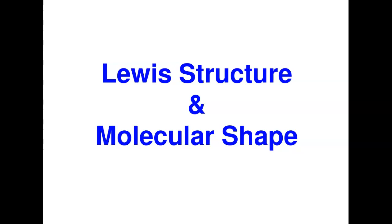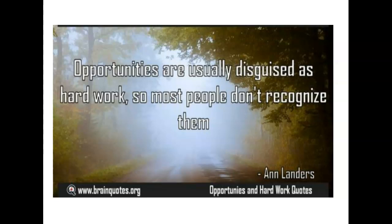Hi y'all, welcome back to today's class. Today we'll be talking about the Lewis structure and molecular shape. This is still a continuation of module 4, where we've looked at ionic compounds and covalent compounds. This will be a follow-up on the shape of a covalent or molecular compound, looking at both their 2D and 3D structure. Remember, we have a quote: opportunities are usually disguised as hard work, so most people don't recognize them.